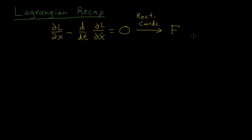Right, so the first term is f, and then the second term is the mass times acceleration, and this equals zero, or f equals ma. So in rectangular coordinates, this Euler-Lagrange formula actually is the same thing as Newton's second law.